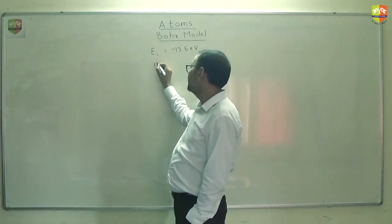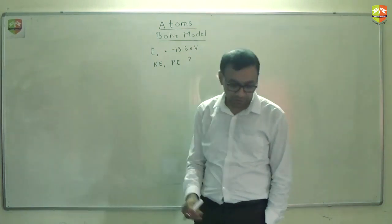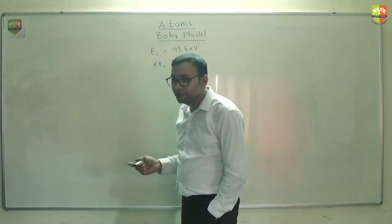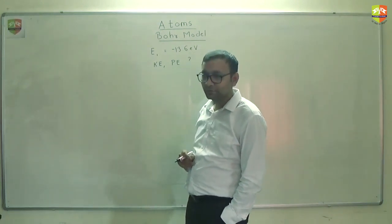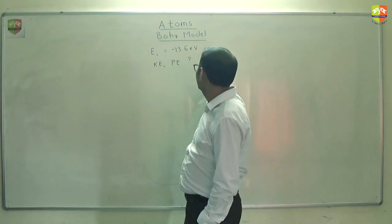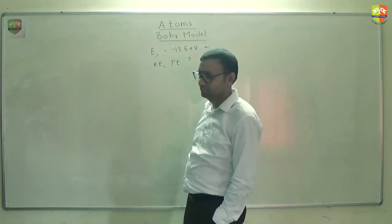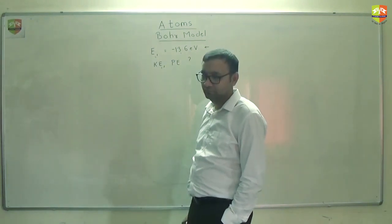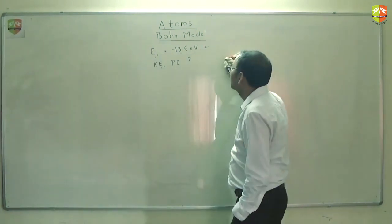Energy in the ground state for a hydrogen atom's electron is minus 13.6 electron volt. What is the kinetic and potential energy in this ground state? Kinetic energy and potential energy. How much is the kinetic energy? 13.6. How much is the potential energy? So when you add kinetic energy and potential energy it should come out to be this or not? Potential energy is double of this. Kinetic energy is minus of this. We have done this.